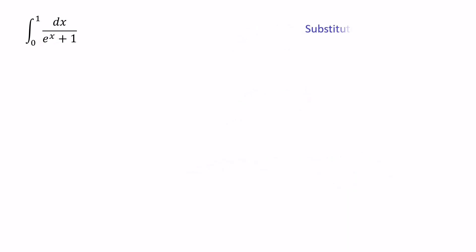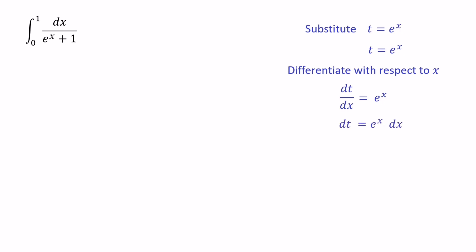Substitute t equals e to the power of x. Differentiating with respect to x, dt over dx equals e to the power of x. Then we can cross multiply the denominator value dx. After that, we can express dx as dt over e to the power of x. Instead of e to the power of x, we can substitute t. So we have dx equals dt over t.